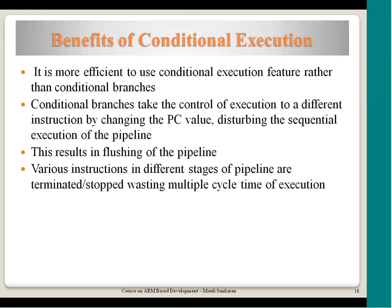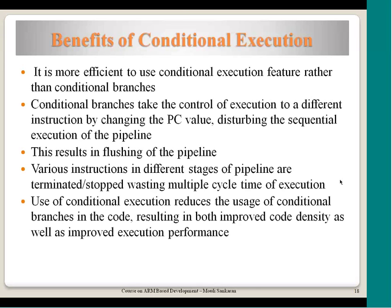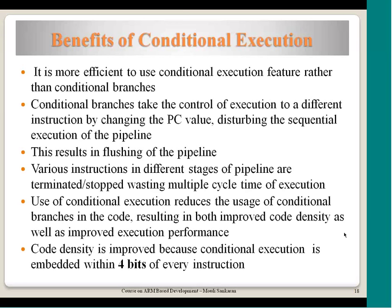Whenever an instruction is executed, it is in the execute stage of the pipeline, and the next 2 instructions in memory are already in the pipeline — one in the decode stage and the other in the fetch stage. Whenever a branch condition is true, those 2 instructions in the pipeline need to be flushed and new instructions fetched, which involves more time. Conditional execution improves performance because there is no flushing of the pipeline, and code density is better because the condition is encoded within the 4 bits of the instruction itself.